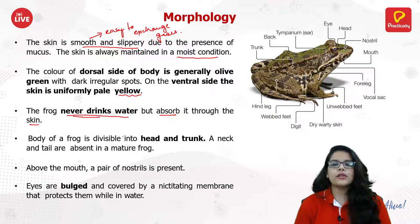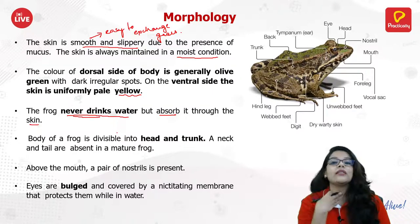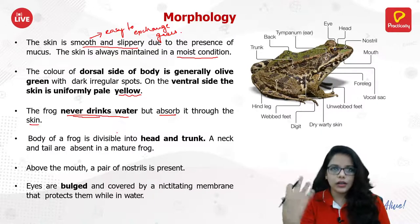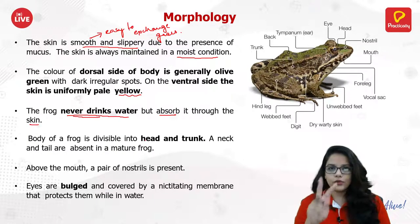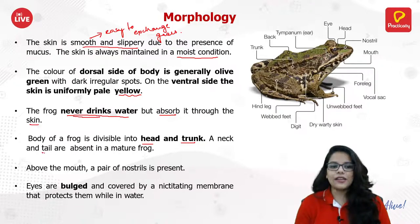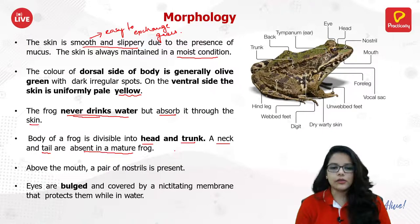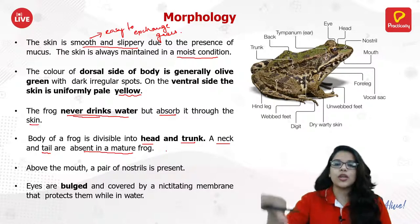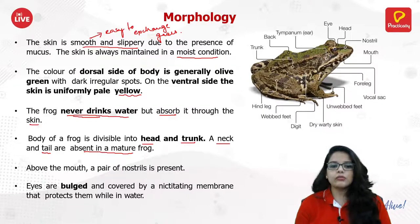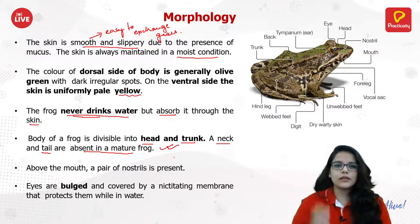A frog's body is divided into only two parts: head and trunk. The neck is totally absent in adult frogs, and the tail is absent in mature frogs but present in tadpoles. The absence of a neck actually helps them swim and jump. Above the mouth, a pair of very small nostrils is present, which helps in breathing.